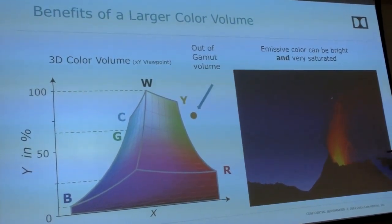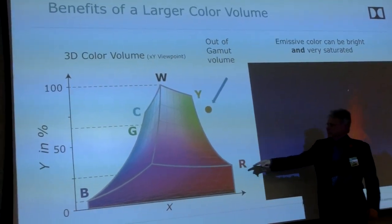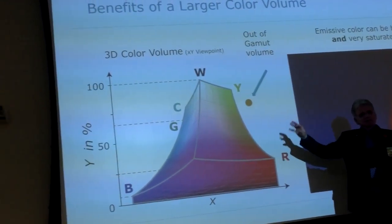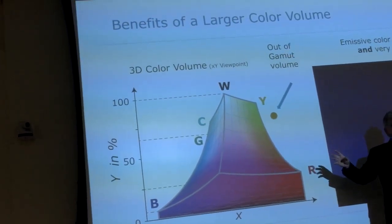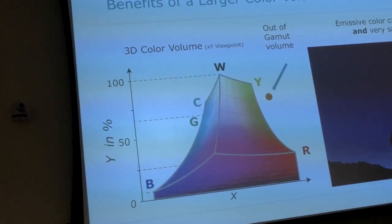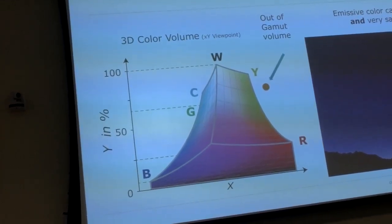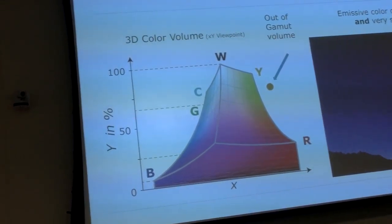And indeed, the color volume kind of looks like a distorted six-sided pyramid. But the color volume for TV is brighter than cinema. Remember that? 48 nits. But it has less color.